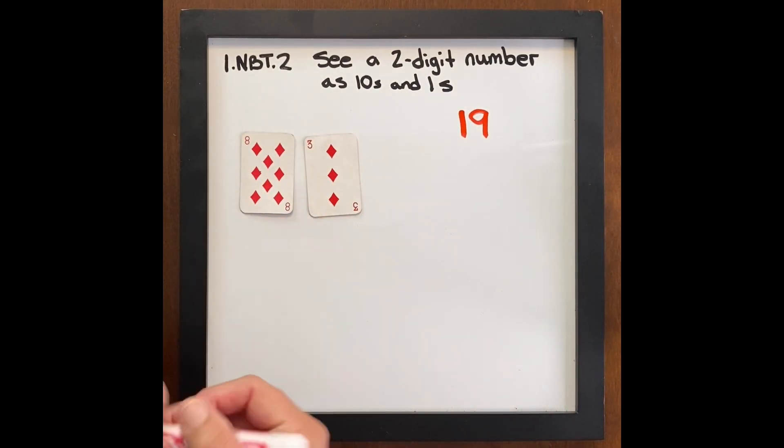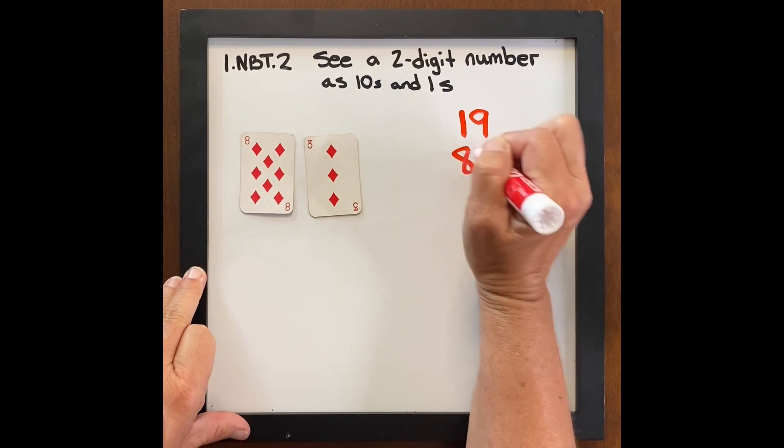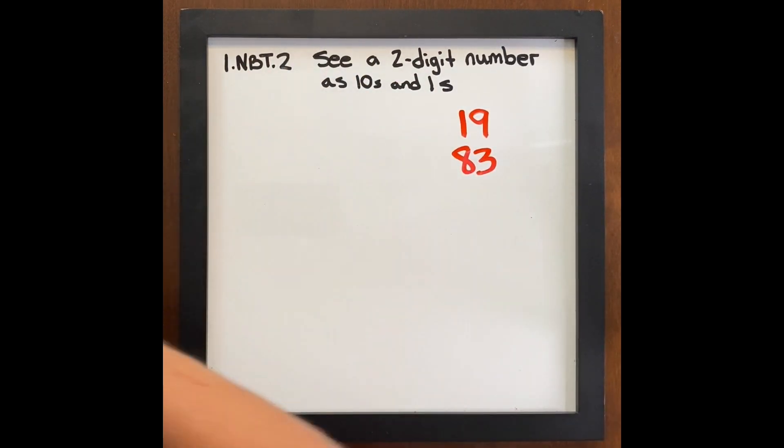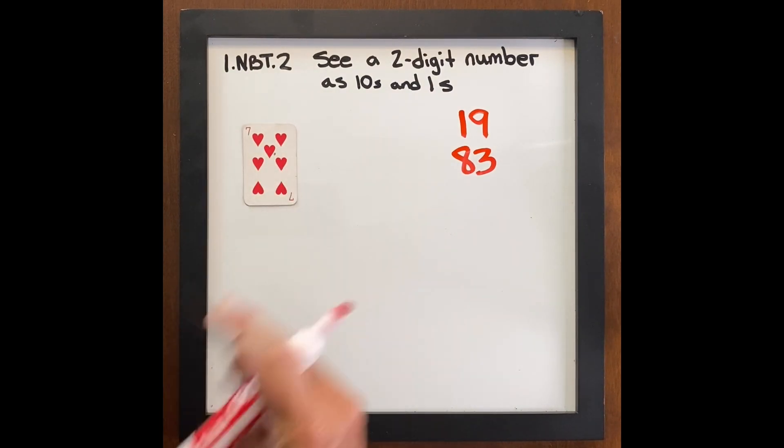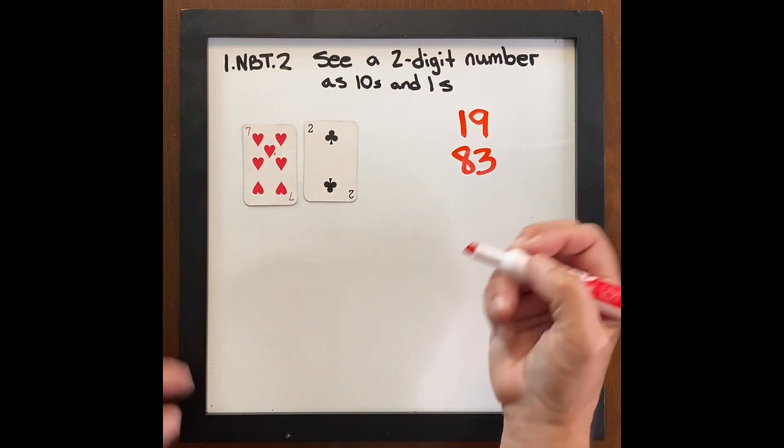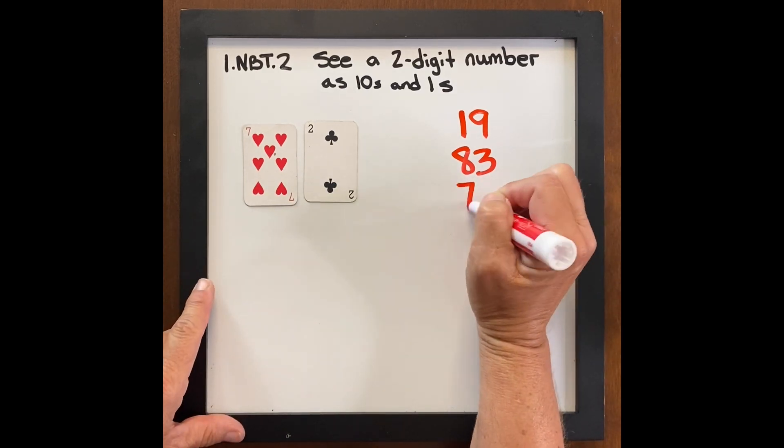Eight tens three. Everybody write eight tens three. You can do it again. Okay, let's write this. They know the first card is a ten. Seven tens two. Everybody write. I want to hear that language. Seven tens two.